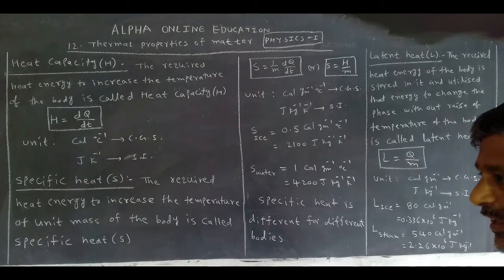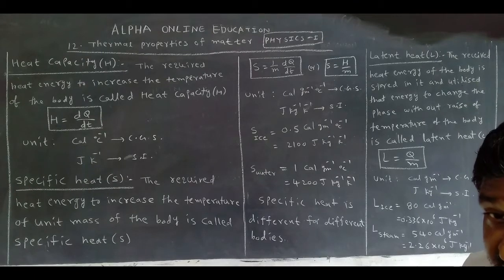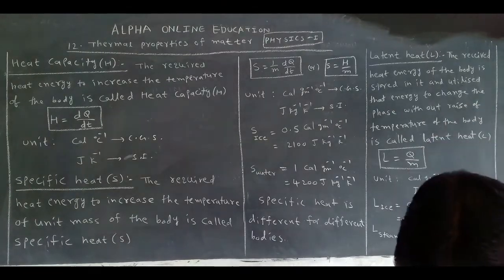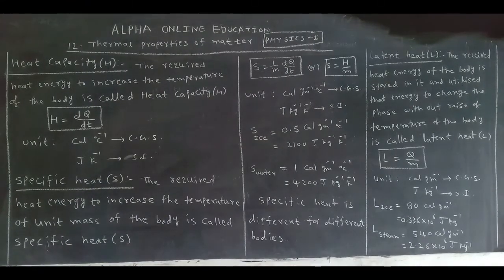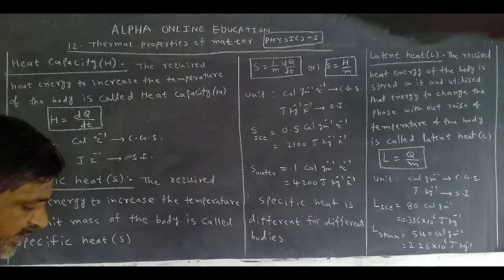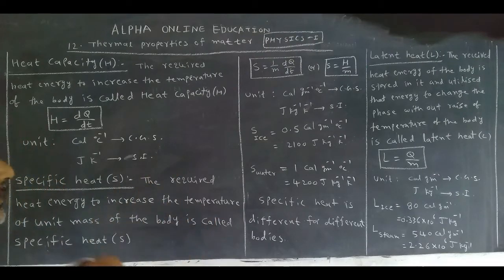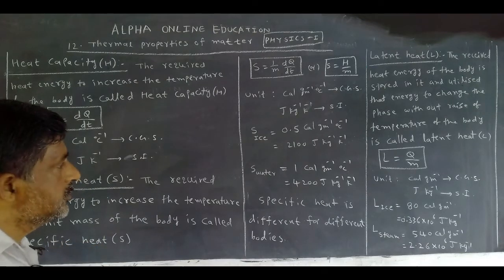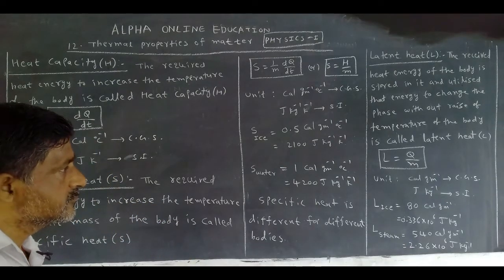Next: latent heat, symbol capital L. We use the term latent heat when an object changes its phase — from solid to liquid, or liquid to gas. The definition: the received heat energy of a body, either solid or liquid, is stored in it and utilized to change the phase without a rise in temperature of that body.